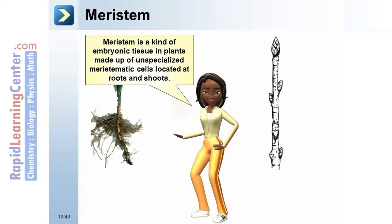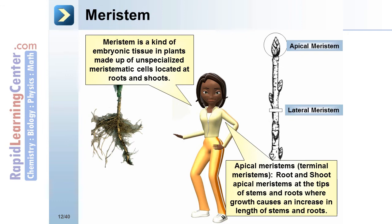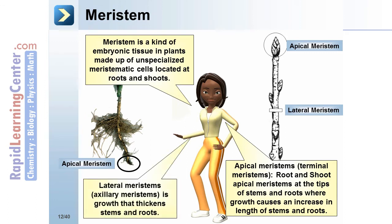Meristem is a kind of embryonic tissue in plants made up of unspecialized meristematic cells located at the roots and shoots. Apical meristems are terminal meristems at the tips of stems and roots where growth causes an increase in length. Lateral meristems, or axillary meristems, are growth that thickens stems and roots.